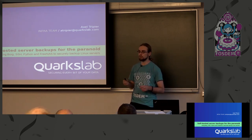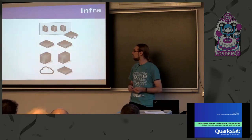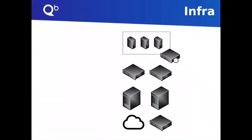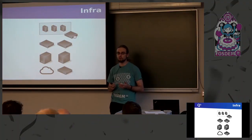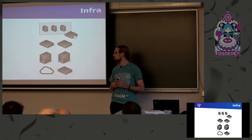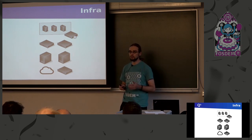Everything is on GitHub, so you have the links at the end of the presentation. At Quartzlab, our infrastructure is composed of different types of servers: virtual machines, bare metal servers that are on-premise, project servers that can contain sensitive information with limited access, and some servers in the cloud — mostly bare metal servers on hosting providers that are encrypted.